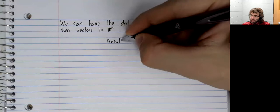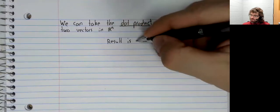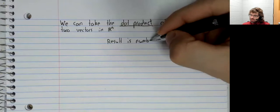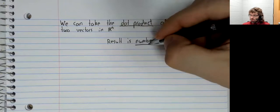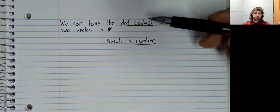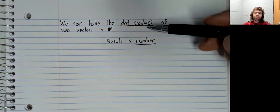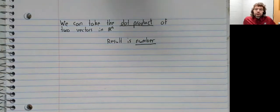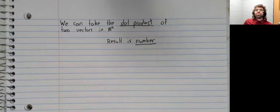The dot product of two vectors is a number. So you see the word product, but this is pretty fundamentally different from when we learn to multiply two matrices, for example. We find that the product of two matrices is another matrix. The dot product of two vectors is a completely different type of object.